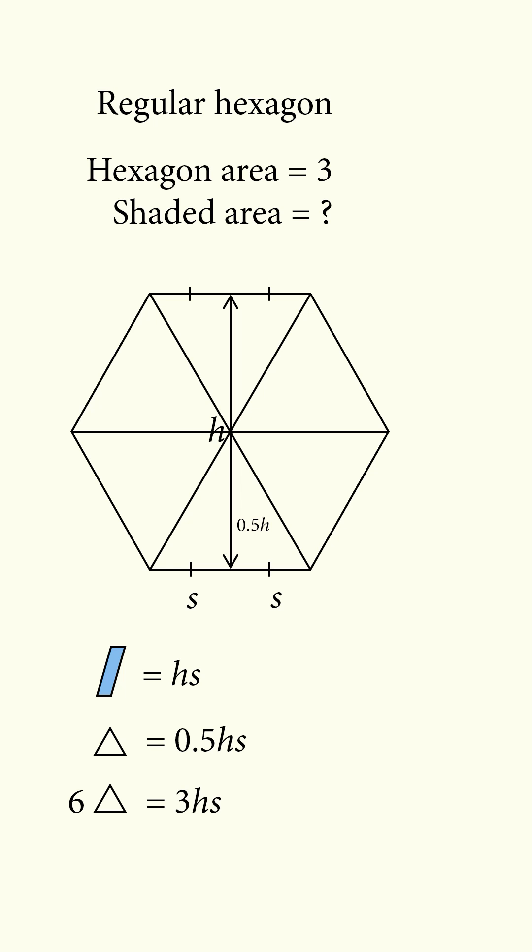So six times that area will be equal to 3hs, and that's equal to 3, which means hs is equal to 1. That's one way to solve the problem.